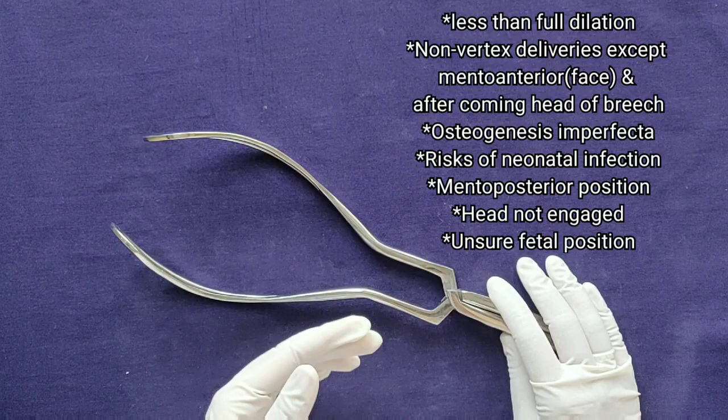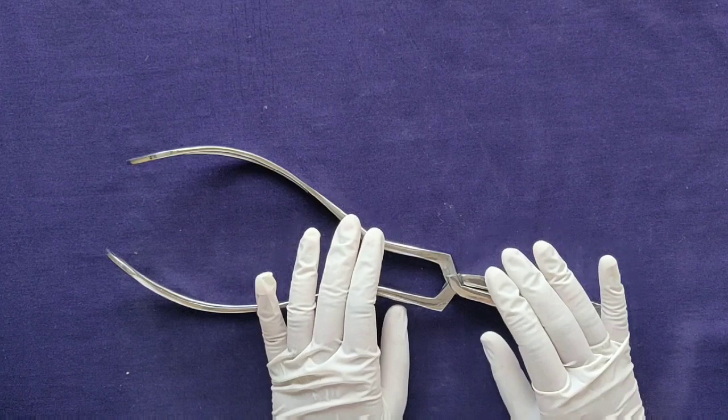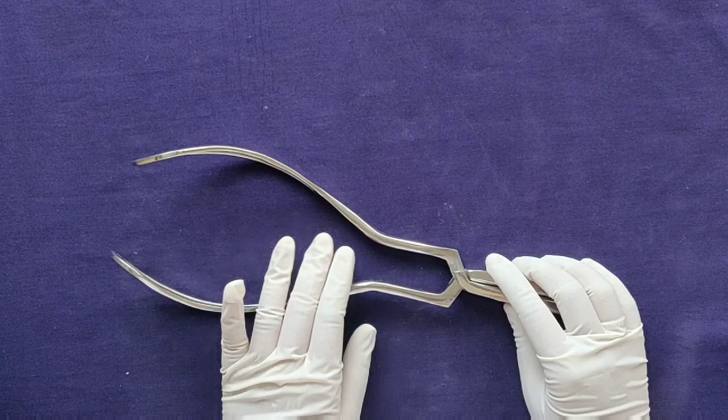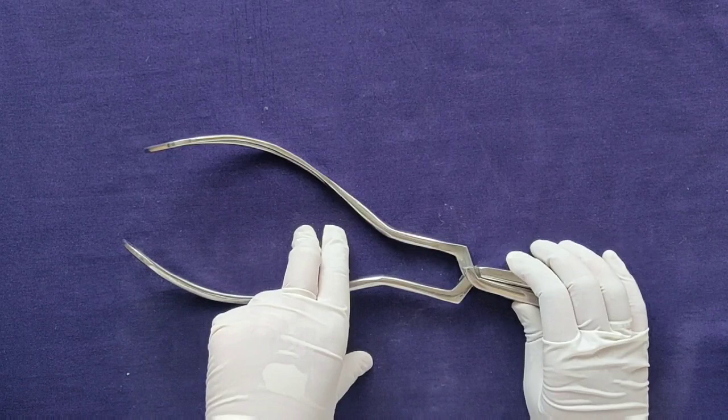Forceps are classified as outlet, low, mid, and high. For outlet forceps, the criteria are: fetal scalp should be visible without separating the labia, fetal skull should have reached the pelvic floor, the sagittal suture should be in the anteroposterior diameter or in right/left occiput anterior or posterior position, and the fetal head should be at or on the perineum.